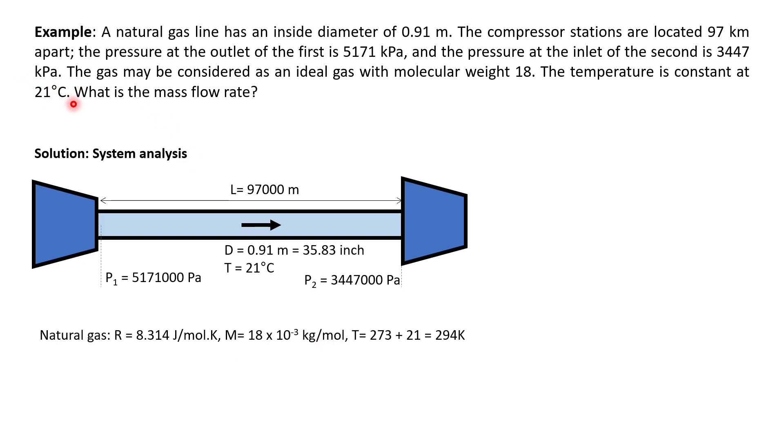And the temperature is constant at 21 degrees Celsius. So what we do next is we simply key in all of the information in the equation here. The only thing left in this equation is the f value. F value we can estimate using the Weymouth equation. Remember the D here must be in inch. So we get this value. You key in all of the values given in the problem there. Then we find out the mass velocity equal to 21.47 kg per second.